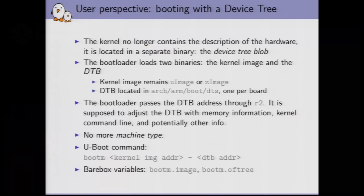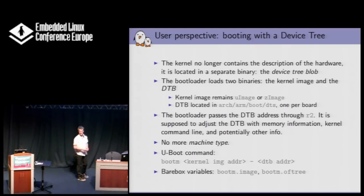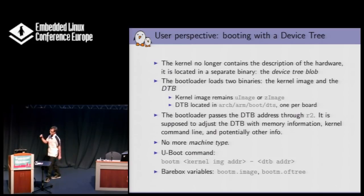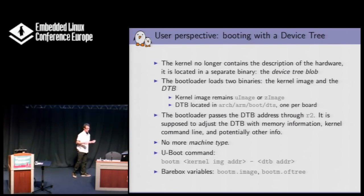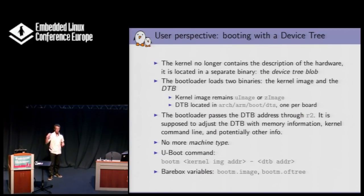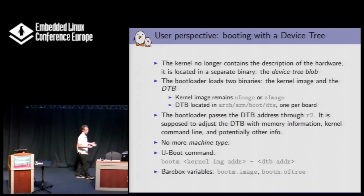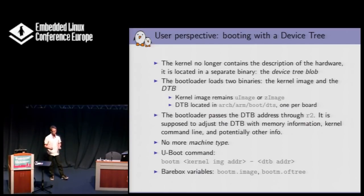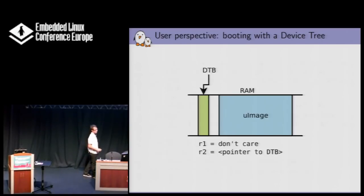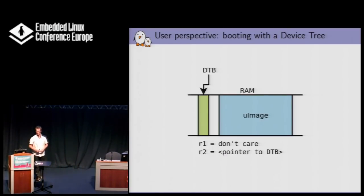What the device tree changes is that the description of the hardware moves into a separate binary blob - a new additional file next to your kernel image. In addition to your U-image or zImage, you have one of those files ending with a .dtb extension, which is the binary compiled version of the device tree describing the hardware platform. The bootloader will actually load two things into memory: the kernel image as it used to do, and also the binary blob. It passes the address of this binary blob to the kernel, which parses it to find out what hardware is available on this particular platform. So it replaces the machine type idea - that no longer exists - and the kernel bases all its hardware discovery on the device tree.